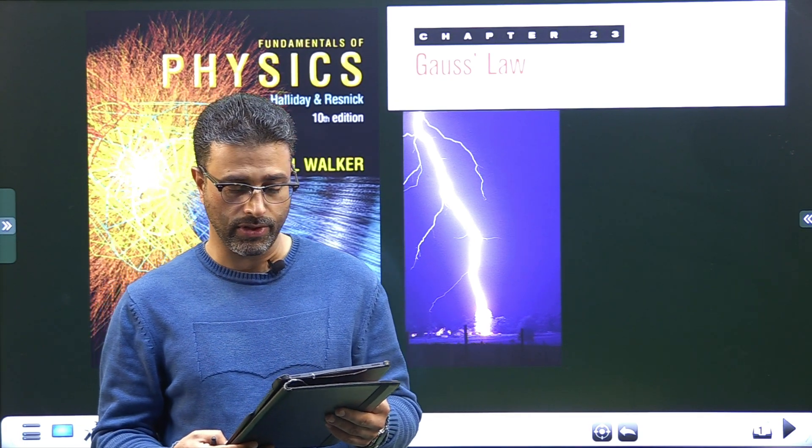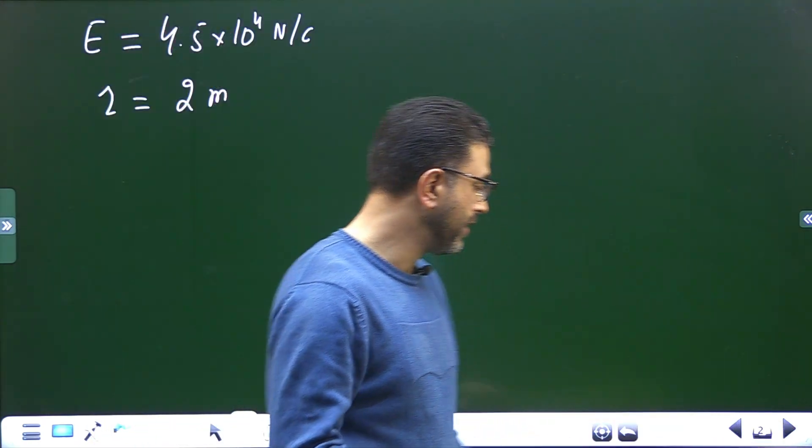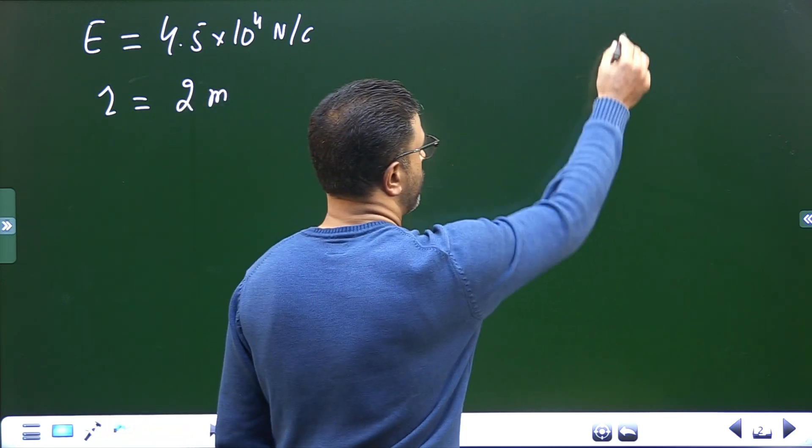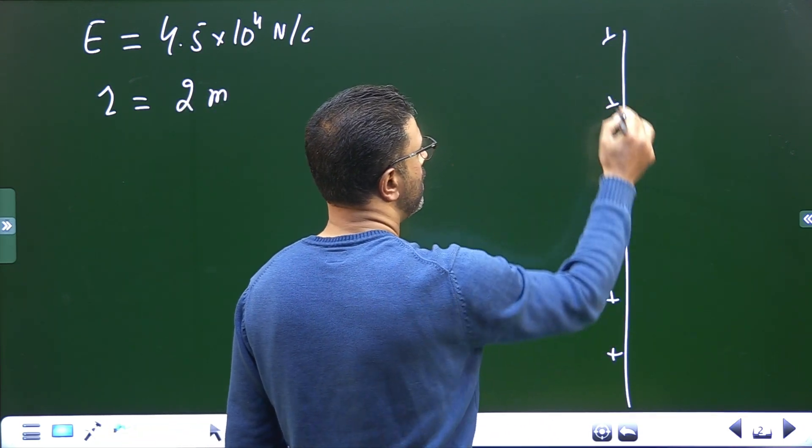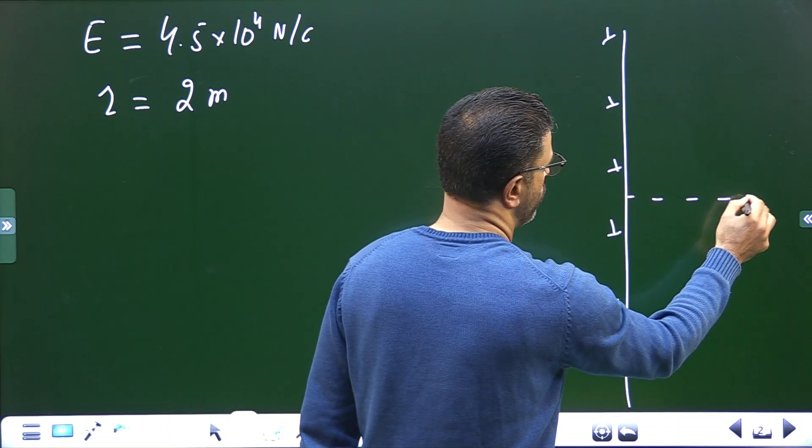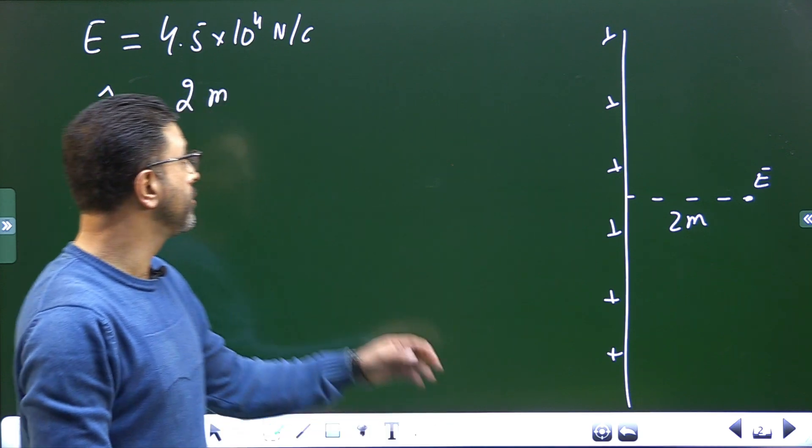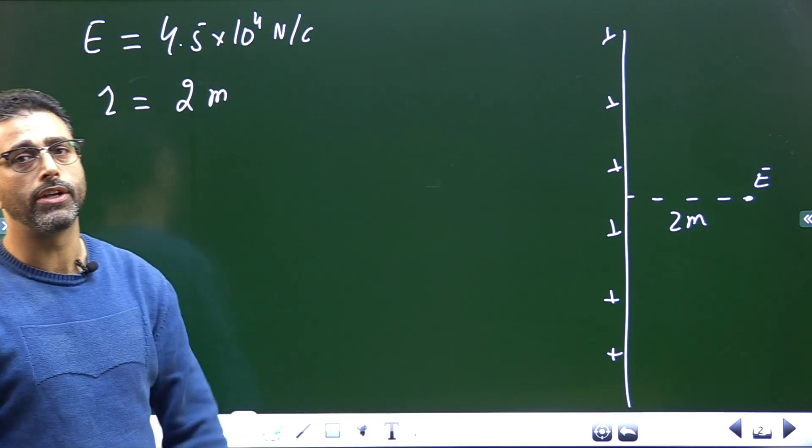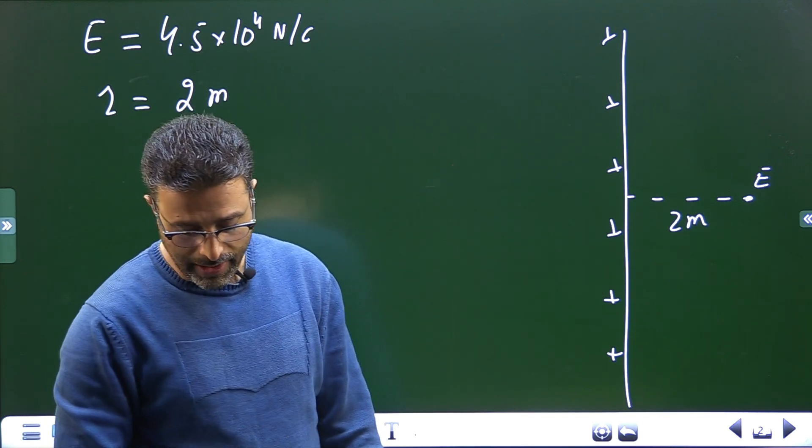So we have an infinite line charge which produces some electric field. If we have an infinite line charge, say a positively charged line, at some distance of 2 meters it produces an electric field E whose magnitude is given by 4.5 into 10 to the power 4 Newton per coulomb. We need to find out linear charge density.